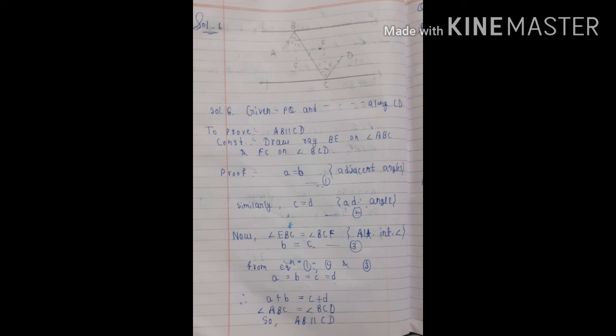From equations 1, 2 and 3, all angles are equal to each other. So finally a plus b equals c plus d. The combination a plus b is angle ABC, and c plus d is angle BCD. These two angles are equal to each other. Since angles formed between two lines are equal by a property, the lines are proved parallel. Therefore AB is parallel to CD, and this question is completed.